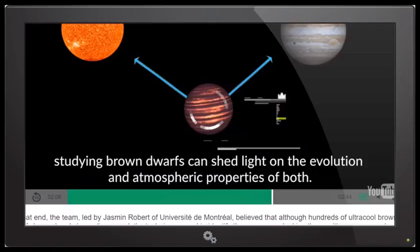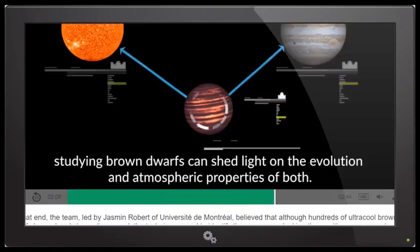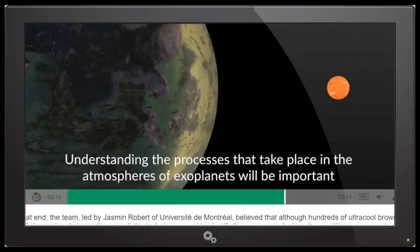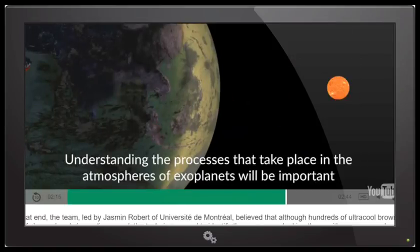Raindrops made of molten iron. Just a horrible place to be. Let's keep on going through this. Very interesting. Now the next frame says, understanding the process that take place in the atmospheres of exoplanets will be important. There's all this big study on these exoplanets.